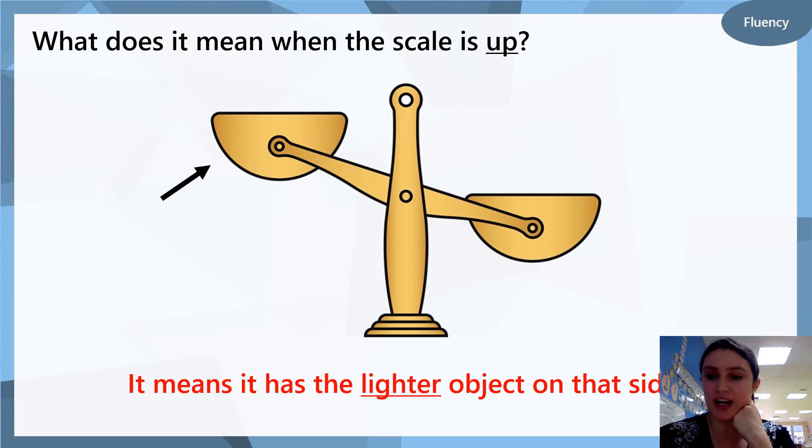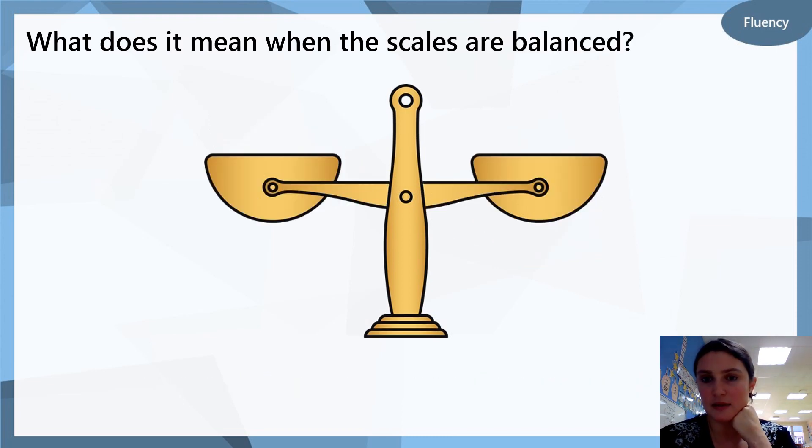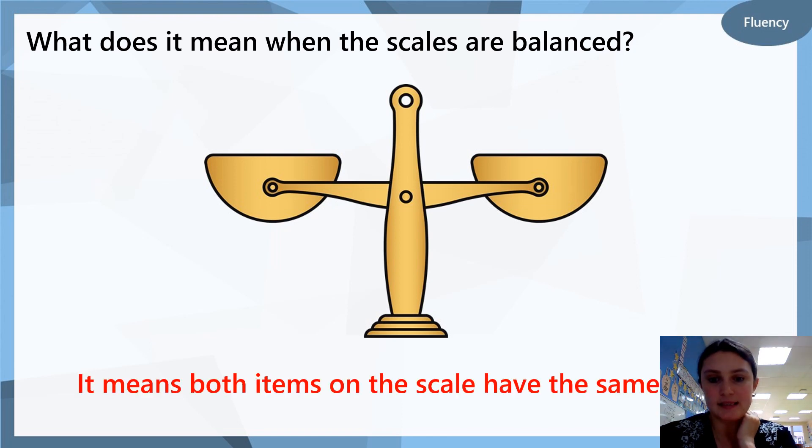Now for a challenge, what do you think it means when the scales are balanced? Balanced means that they are both on the same side. What do you think that might mean? It means that both the items in the scale have the same weight. They both weigh the same. So if you put one pencil and one pencil, they will both weigh the same. The scales will be balanced.